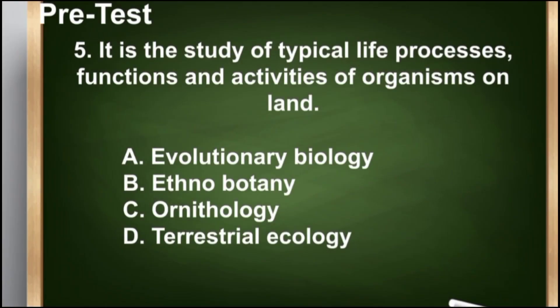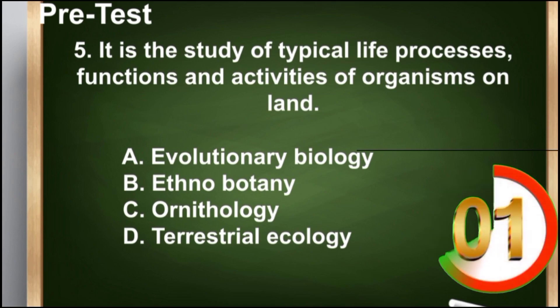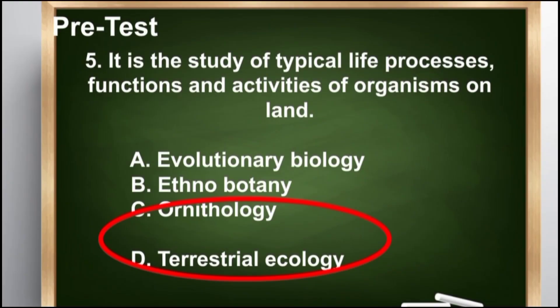Number 5: It is the study of typical life processes, functions, and activities of organisms on land. A. Evolutionary biology, B. Ethnobotany, C. Ornithology, D. Terrestrial ecology. The correct answer is letter D, terrestrial ecology.